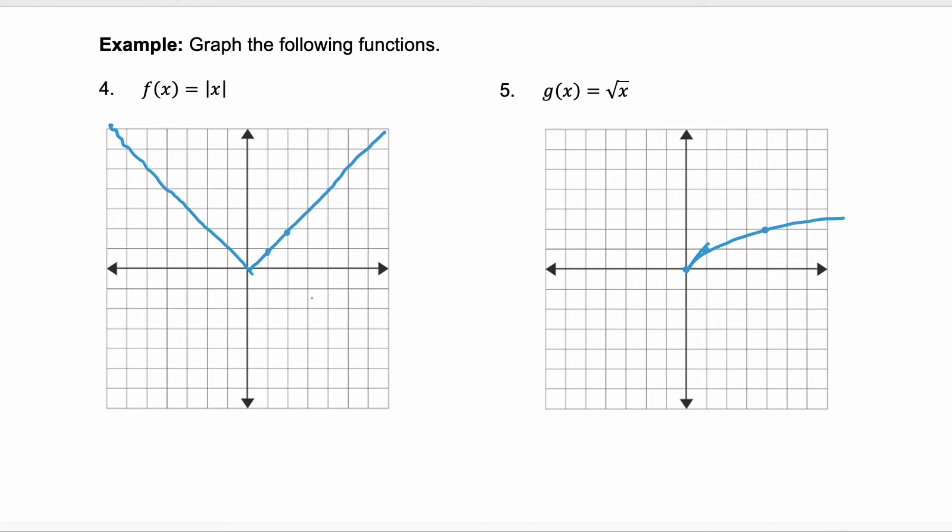Notice that the domain or possible x values for that first function, the absolute value, the domain is all real numbers. Negative infinity through infinity, right? x can be any value. But the domain here for 5 is going to be from 0 to positive infinity.